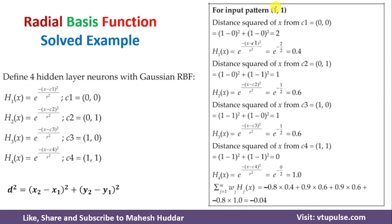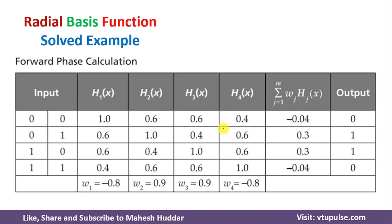The same process is followed for the fourth input pattern 11. We get h1(x) = 0.4, h2(x) = 0.6, h3(x) = 0.6, and h4(x) = 1.0. Using the formula, the output at the output layer neuron equals minus 0.04. This same information is represented in a table showing h1(x), h2(x), h3(x), h4(x) for each input and the corresponding output layer value.